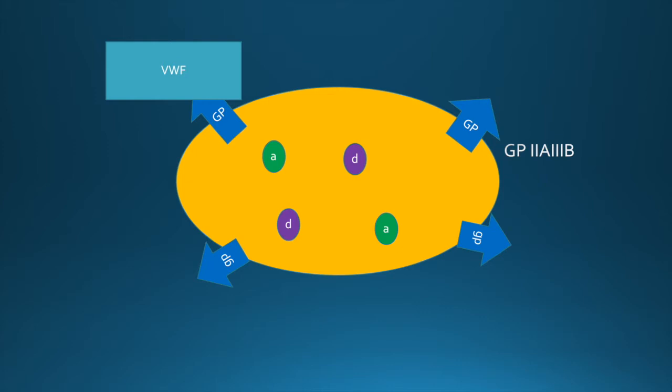On the surface of the platelet exists glycoprotein 2a3b receptors, which are essentially receptors with significant affinity for von Willebrand factor. Once these platelets are bound to von Willebrand factor, they become activated.